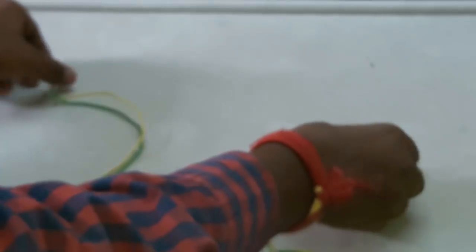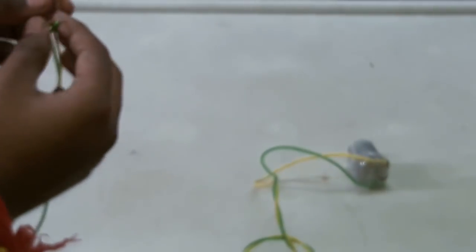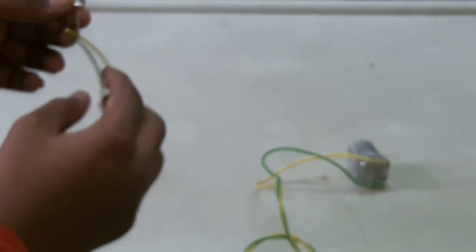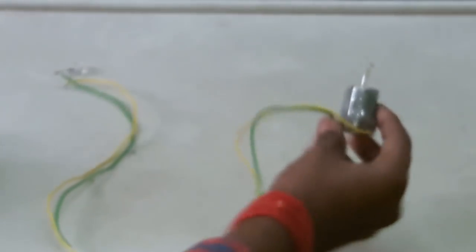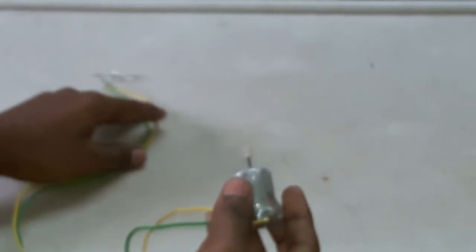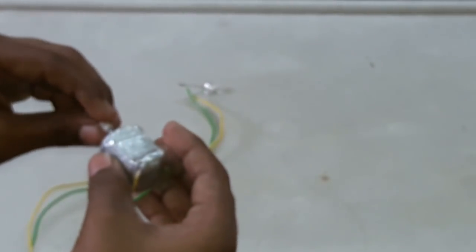I have connected the two wires, negative and positive, and I have connected the LED light negative and positive. Let's see how it works. Let me rotate it.